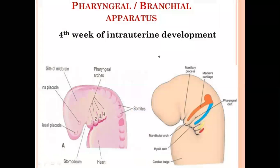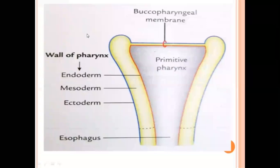Today we are going to start with the pharyngeal apparatus or pharyngeal arches. This is in the cranial part of the foregut. When there is folding of the endoderm, the gut is formed. This gut has got foregut, midgut, and hindgut. The cranial part of the foregut has mesodermal thickening, and those mesodermal thickenings are known as pharyngeal arches.